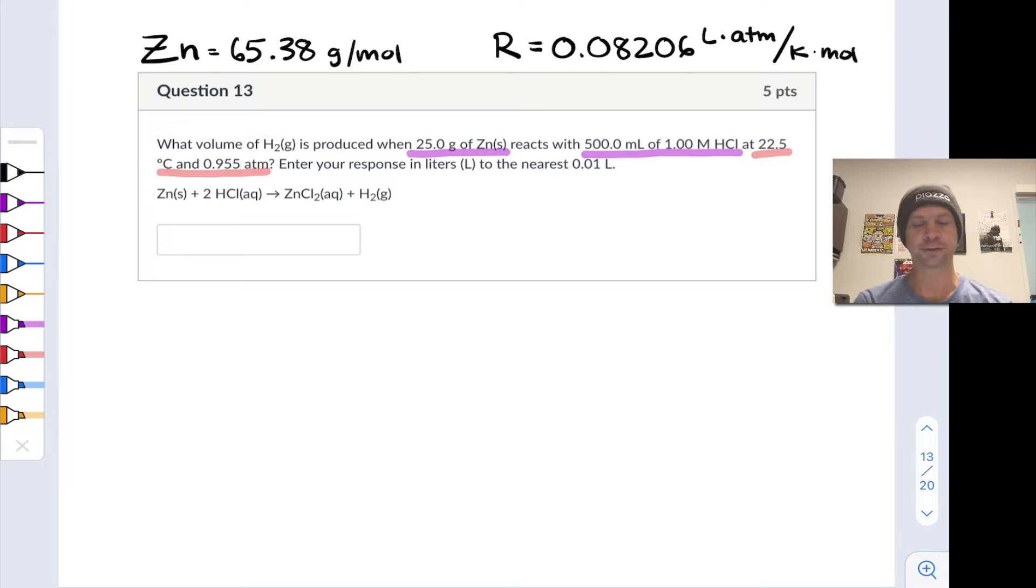So in this question, number 13, we're asked about the volume of H2 gas produced when 25 grams of zinc reacts with 500 milliliters of 1 mole per liter hydrochloric acid according to the balanced chemical equation that you see here at constant temperature and pressure conditions here that are underlined in red, 22.5 degrees C and 0.955 atmospheres.